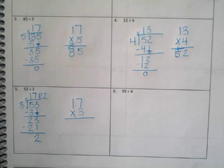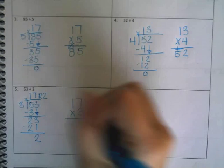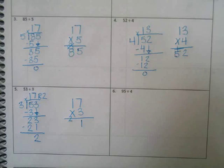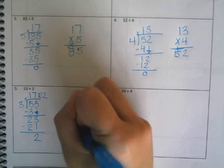So, 17 times 3. Alright, this is easy math. We can do this. 3 times 7 is? 21. 3 times 1? 3. Plus 2? 5. 51.